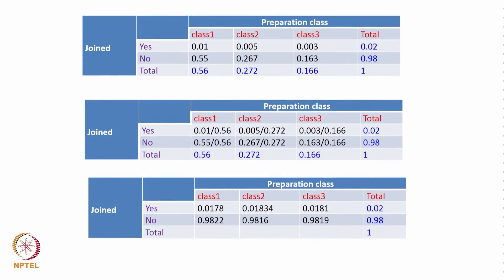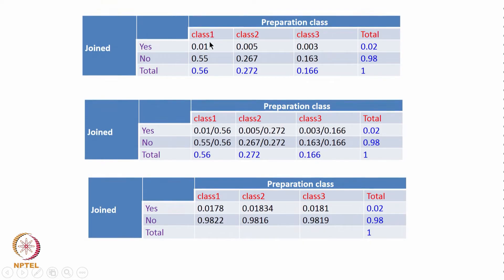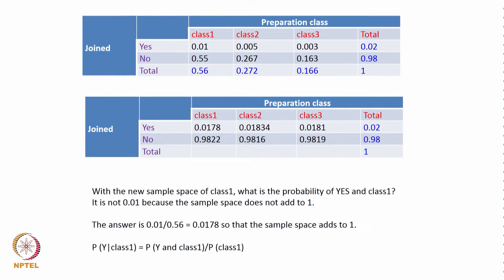If you ask what percentage of people who came from class 1 joined, it is 0.01 divided by 0.56, which is 0.0178. We get the last table by doing these divisions. What is the probability that a person going to class 1 joins the program? It is 0.01 divided by 0.56. With the new sample space of class 1, the probability of yes given class 1 is 0.0178 so that the sample space adds up to 1. Probability of joining given class 1 equals P(joining and class 1) divided by P(class 1).